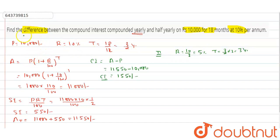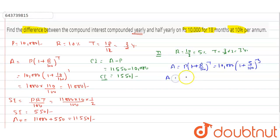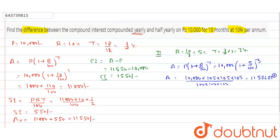We calculate the amount for 3 periods: A equals P times (1 plus R upon 100) to the power T. Putting in the values: P is 10,000, R is 5 percent, T is 3, giving 10,000 into (105/100) cubed, which equals 10,000 into 105 into 105 into 105 upon 100 into 100 into 100, equal to 11,576.25 rupees — the amount after one and a half years at 10 percent compounded half-yearly.